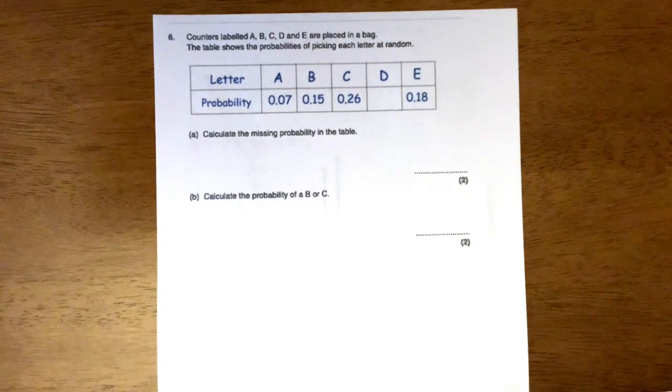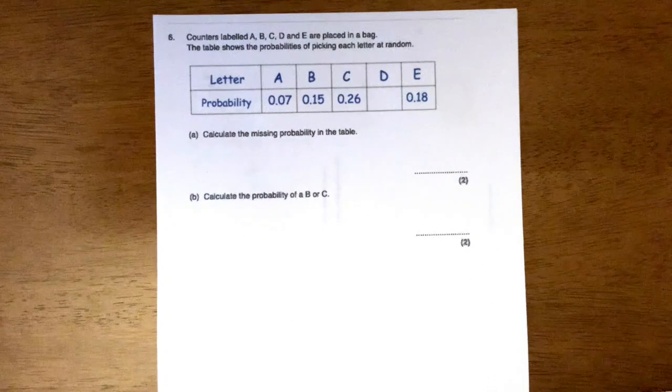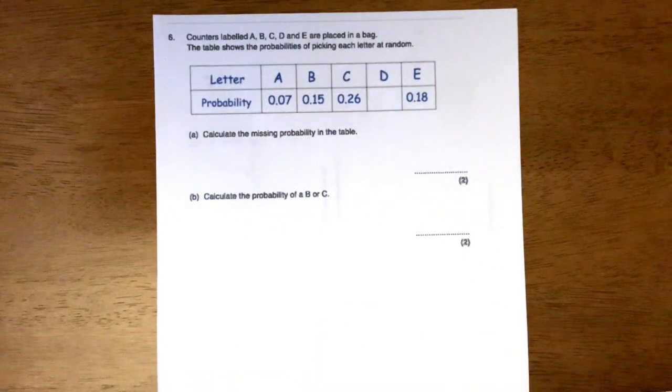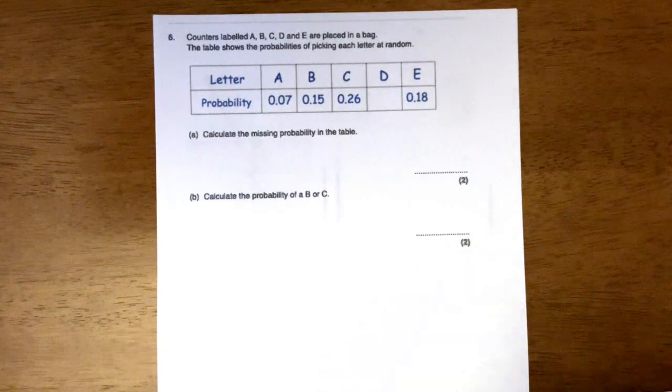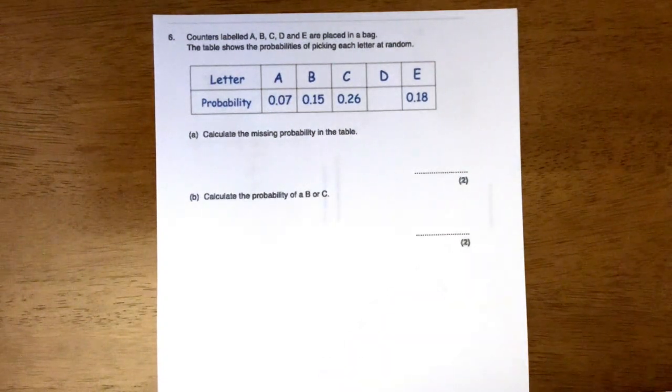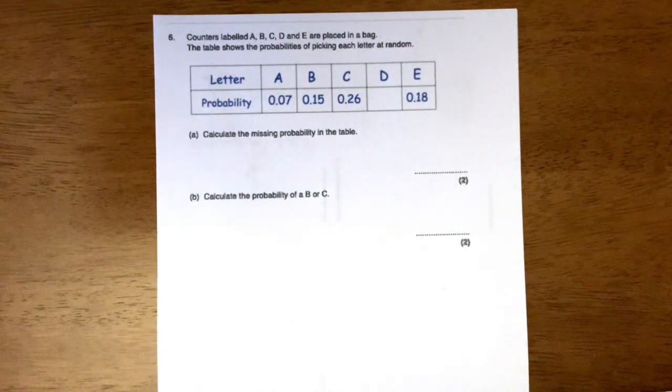Now last week we looked at writing them as a fraction but this week we're going to look at them as decimals. So the thing that you need to know is that probabilities always, the highest they can go is 1 and we know that because that's the certain chance of something happening. So that's if everything happens in the probabilities they will all add together to make 1.